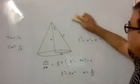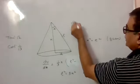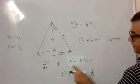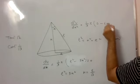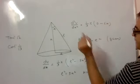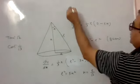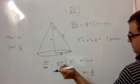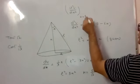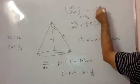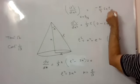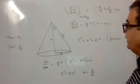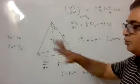Go for the second derivative and check whether it is maximum or minimum. d²V by dH² comes out to be 1 by 3 pi times minus 6H. With H equal to L by root 3, the result comes out to be negative. Second derivative is negative, which means the volume comes out to be maximum.